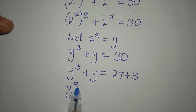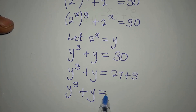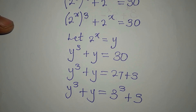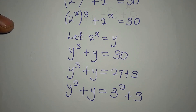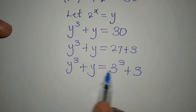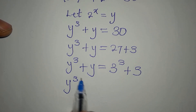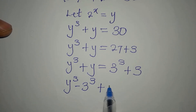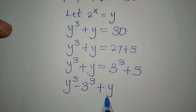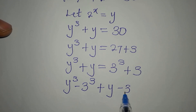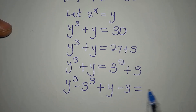So y cubed plus y equals 3 cubed plus 3. Now we compare the left-hand side and the right-hand side, bringing everything to one side: y cubed minus 3 cubed plus y minus 3 equals 0.